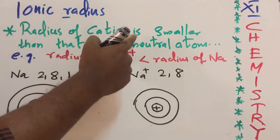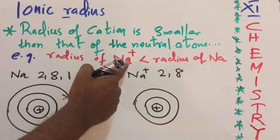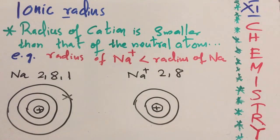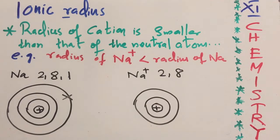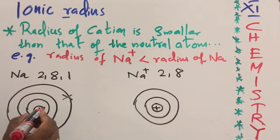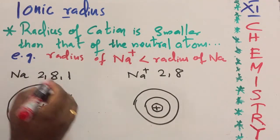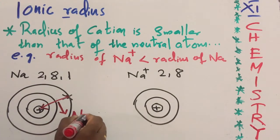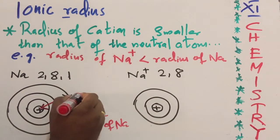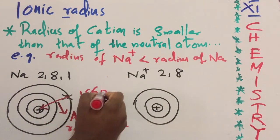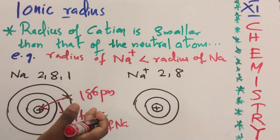The radius of a cation is found to be smaller than that of the neutral atom. For example, the radius of the sodium cation is less than the radius of Na. Sodium has atomic number 11, and its Bohr model has 3 shells: K, L, and M. The atomic radius is the distance from the center of the nucleus to the outermost shell. Experimentally, the atomic radius of sodium is found to be 186 picometers.